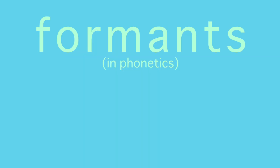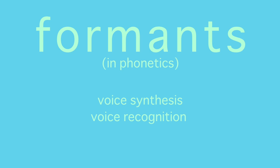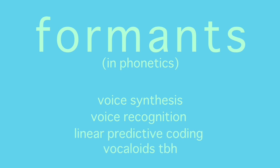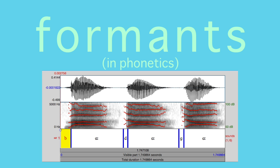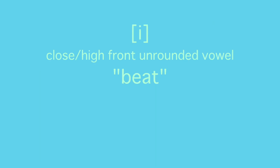Each syllable contains three parts: a starting consonant, a vowel, and an ending. Let's start with the vowels. There are these things called formants, which are the frequencies that make up the sound of a vowel. There are entire fields of study based on the subject, but in a nutshell, the frequencies of any given vowel are actually very measurable, predictable, and replicable. Take this vowel for example.